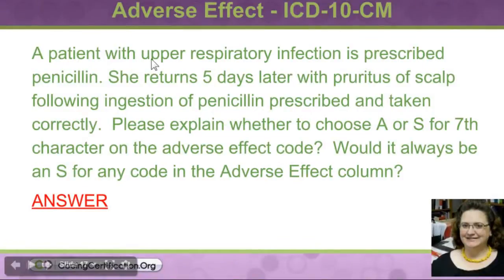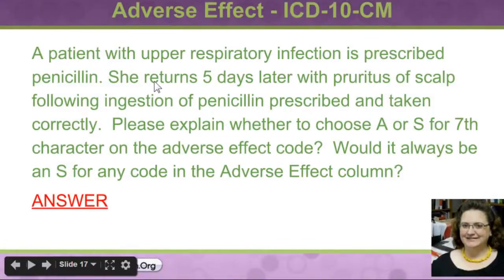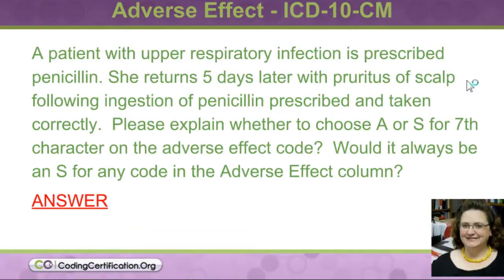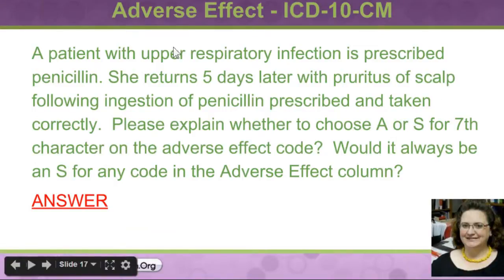The question came in: a patient with upper respiratory infection is prescribed penicillin. She returns five days later with pruritus of the scalp following ingestion of penicillin prescribed and taken correctly. Please explain whether to choose A or S for the 7th character on the adverse effect code. Would it always be an S for any code in the adverse effect column?